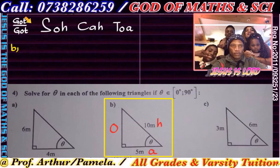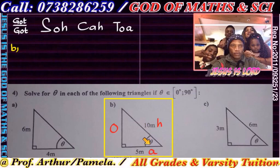Look at what you've got: you've got A — the 5, the adjacent — and H, the hypotenuse. Which trig ratio has A and H? There it is — it's cos.